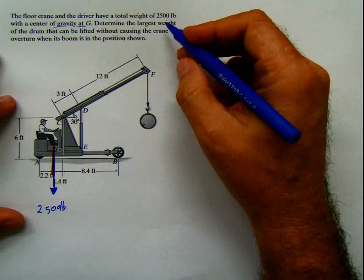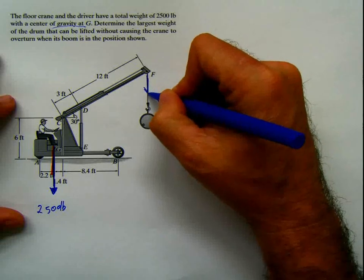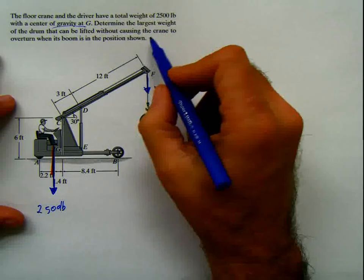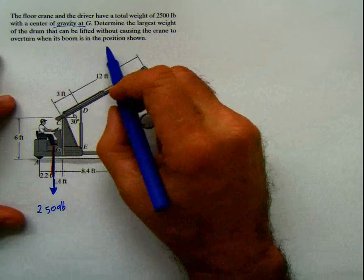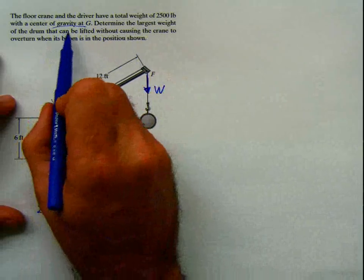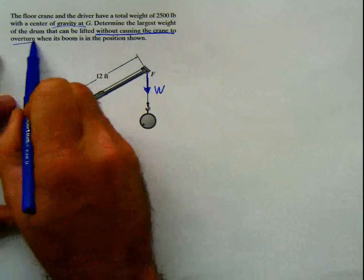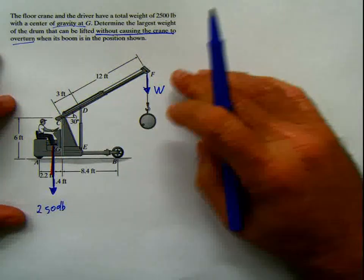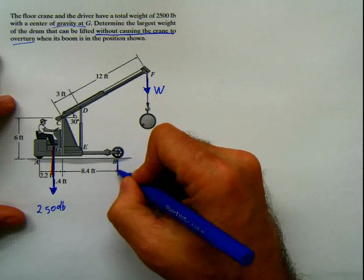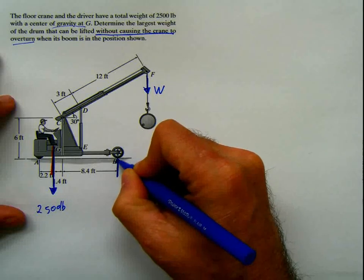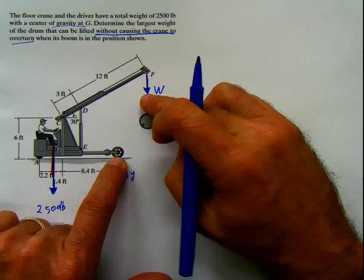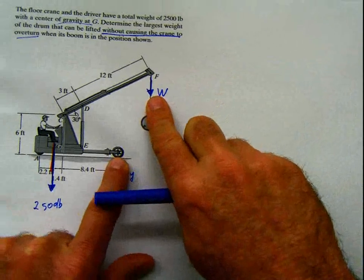Now it says: determine the largest weight of the drum that can be lifted without causing the crane to overturn when its boom is in the position shown. This is important — it can be lifted without causing the crane to overturn. The clue you have to take into account is that if you lift this, this wheel here has to produce a reaction coming in this direction, which I'm going to call Vy. The whole thing is going to try, when I apply this load, to overturn with respect to this point.